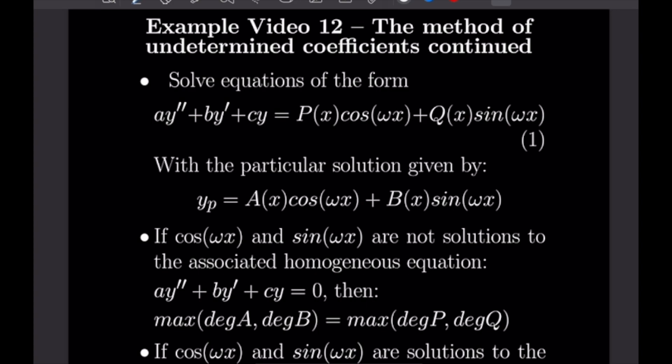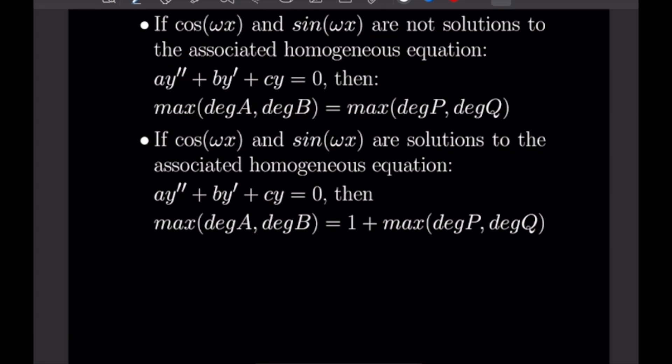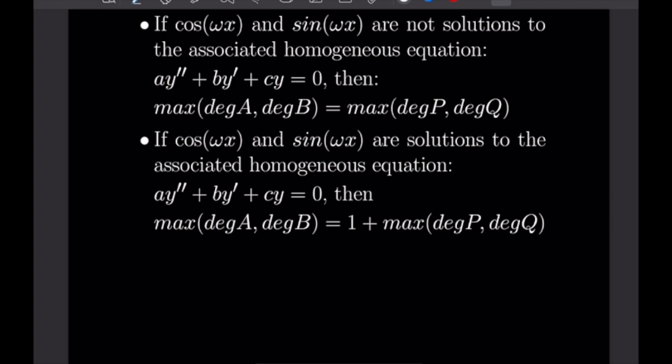Our goal for today's video is to solve equations of the form AY'' + BY' + CY = P(x)cos(ωx) + Q(x)sin(ωx). The particular solution will be Y_p = A(x)cos(ωx) + B(x)sin(ωx). If cos(ωx) and sin(ωx) are not solutions to the associated homogeneous equation, the maximum degree of A and B equals the maximum degree of P and Q. But if they are solutions, the maximum degree of A and B is 1 plus the maximum degree of P and Q.